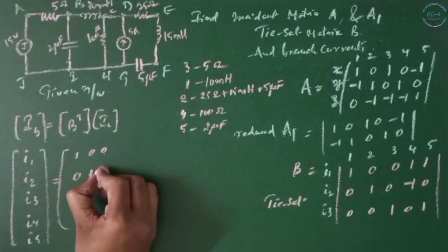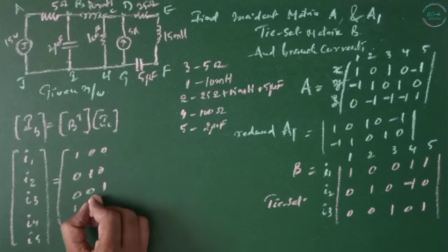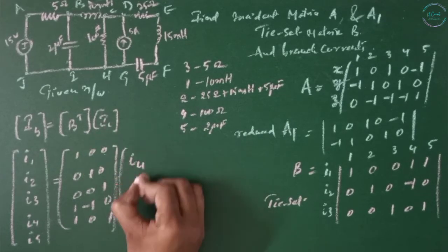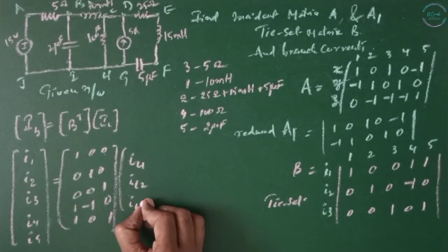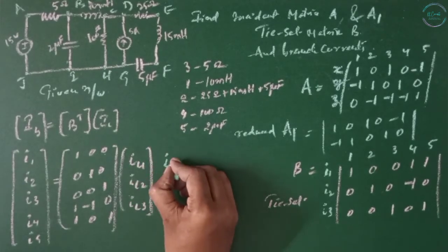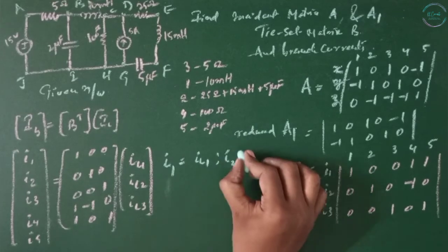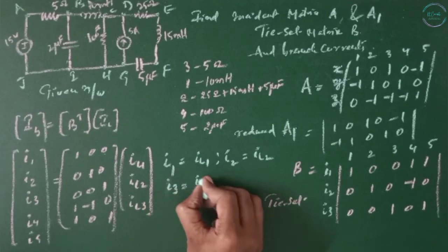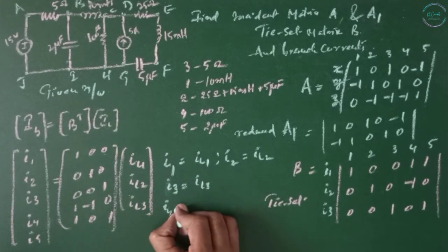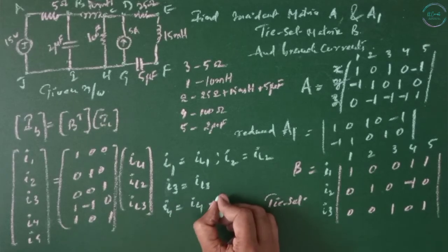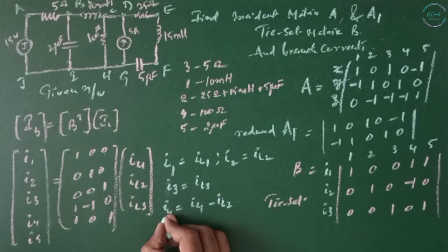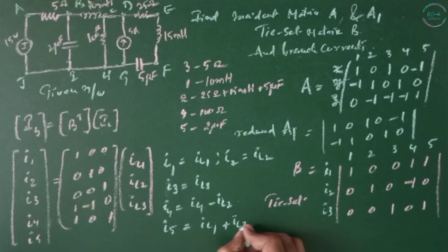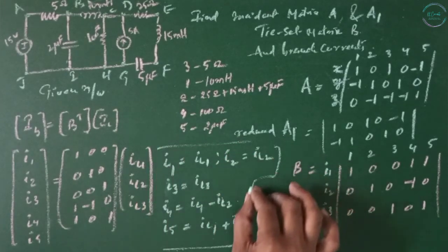I1 equals IL1, I2 equals IL2, I3 equals IL3. I4 equals IL1 minus IL2, I5 equals IL1 plus IL3. So these are the current branch equations.